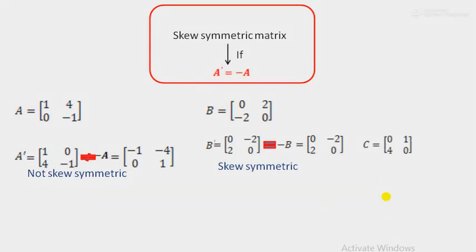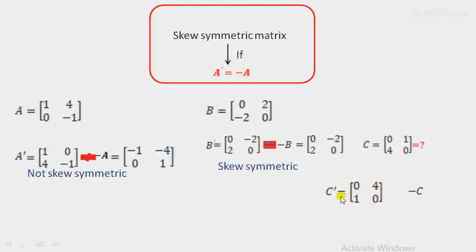Let us consider another example, matrix C. Again we have to check whether it is skew symmetric or not. First find C': the transpose gives 0, 4, 1, 0 — where 0, 1 in row form becomes column 0, 1 and 4, 0 in row form becomes column 4, 0. Then find minus C: multiply by negative sign, so 0 stays 0, 1 becomes minus 1, 4 becomes minus 4, and 0 stays 0. Here C' and minus C are not equal. Therefore, it is not a skew symmetric matrix.